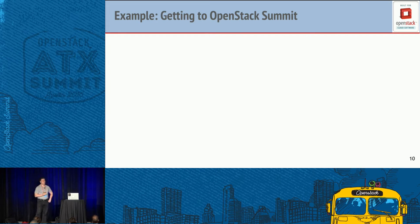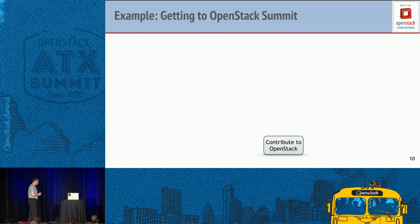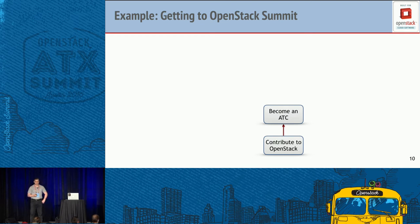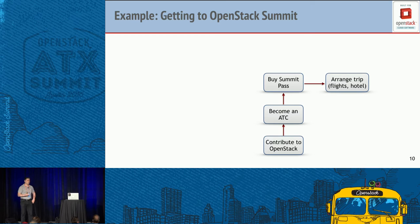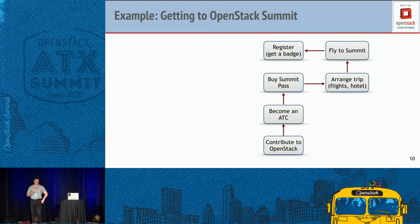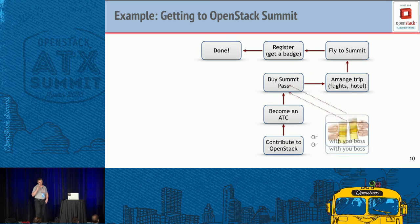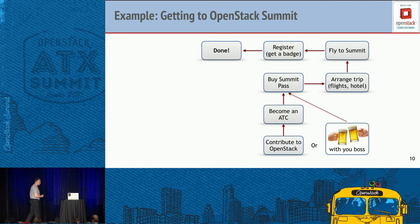As a concrete example, consider getting to an OpenStack Summit. First, you need to contribute to OpenStack. Then become an active technical contributor. Then buy the summit pass, arrange the trip, book flights and hotel, fly to the summit, register at the desk, and get a badge. Alternatively, if you have a good relationship with your boss, you can skip the first two steps.